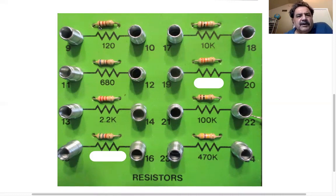So, if you look, you'll see this first one is a brown, red, brown. So brown is 1, red is 2, so that's 12. And then times 10 to the 1 is just 10, so it's 12 times 10, 120.